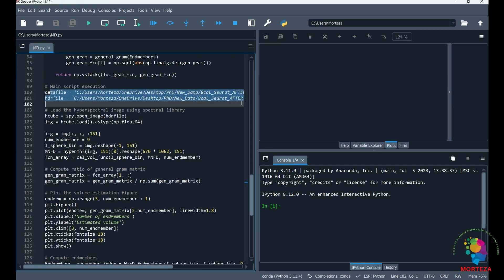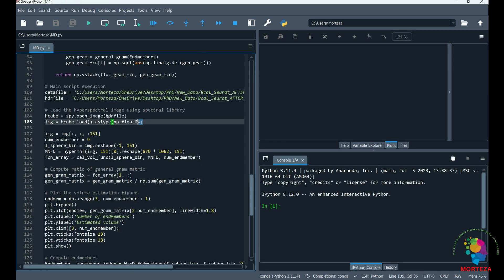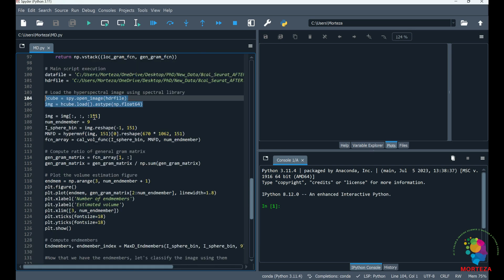These two help compute the gram matrix, and this is to calculate the volume of the linearly independent end members. This is where the function really starts. This is where our hyperspectral data is located—the HDR file, the header file, and the data itself. This is where we are opening and loading the data.